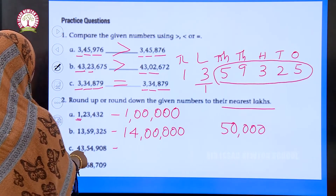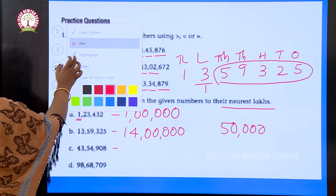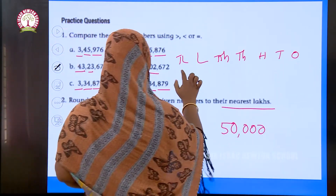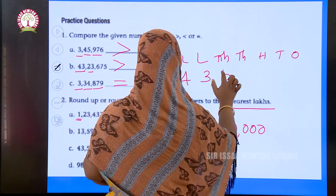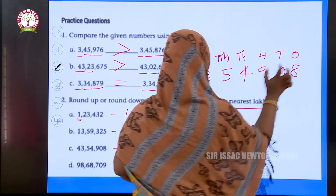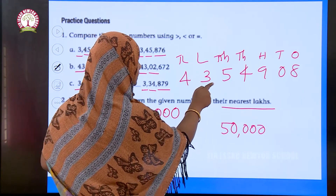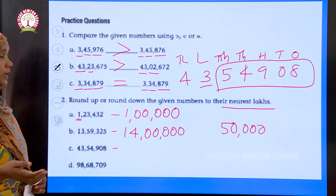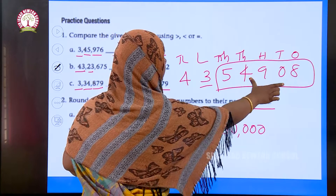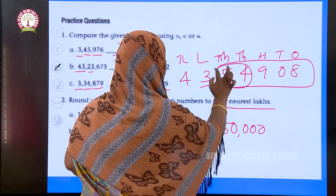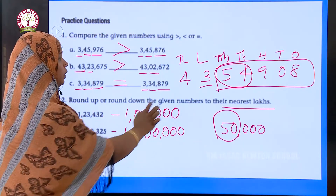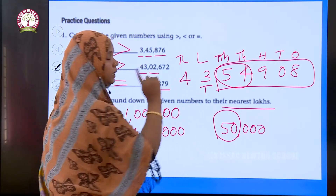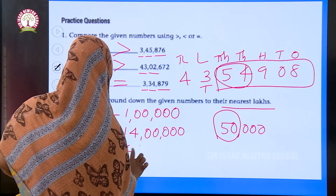Next: 43,054,908 to the nearest lakh. We look at the next digits: 54,908. Since 54 thousands is greater than 50,000, we round up and add 1 to the lakhs place. This gives 44 lakhs.